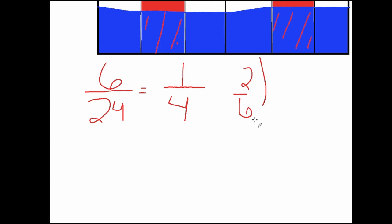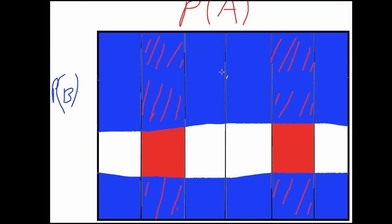Notice that if we multiply them together, the two sixths multiplied by the three over four, we obtain our six over 24, which is what we got in this step by just counting the boxes.